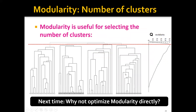Once we know how to compute modularity for any partitioning, we can use it to select the number of clusters. For example, using the Girvan-Newman algorithm for hierarchical clustering, we can find that the modularity is largest when we have three communities, and therefore we set the number of clusters to three. Now, since we're using modularity to select the number of clusters anyway, why not just optimize the modularity directly? This will be the focus of the next part of this lecture.